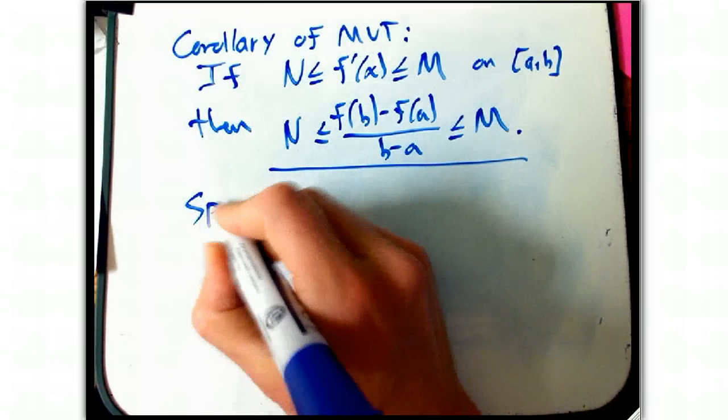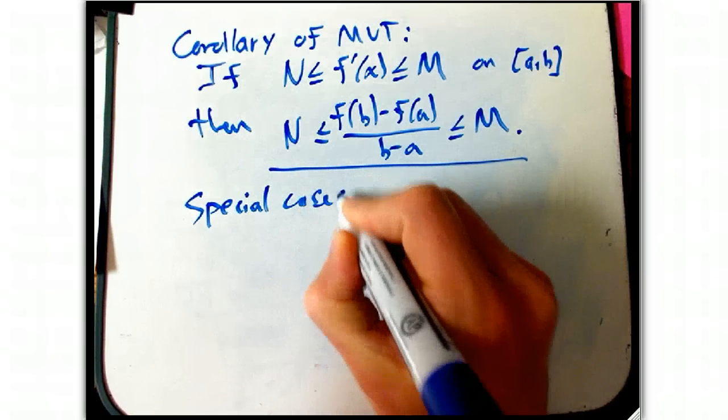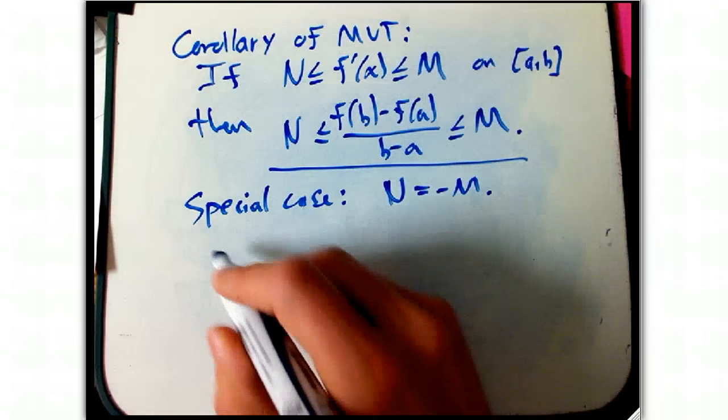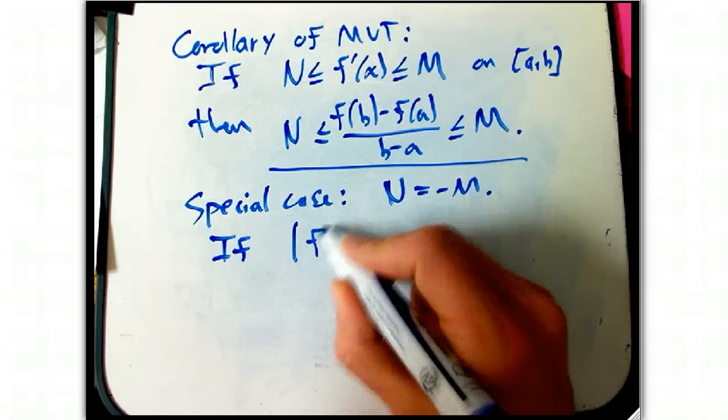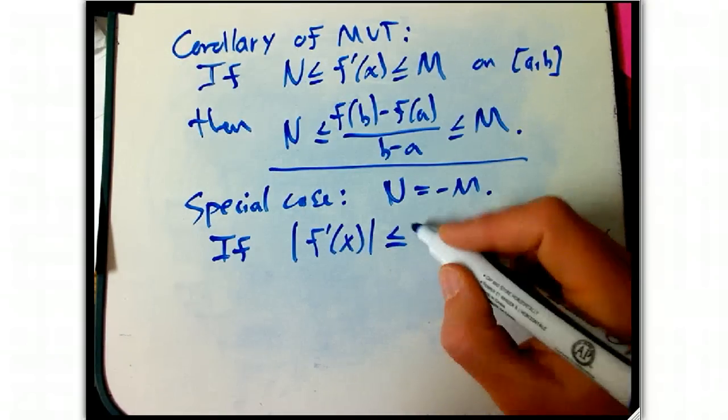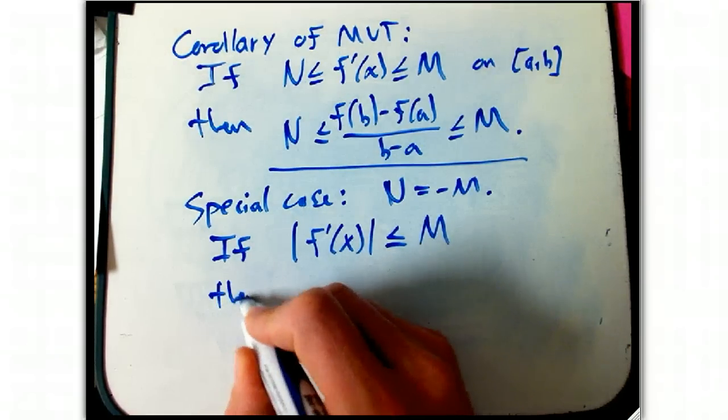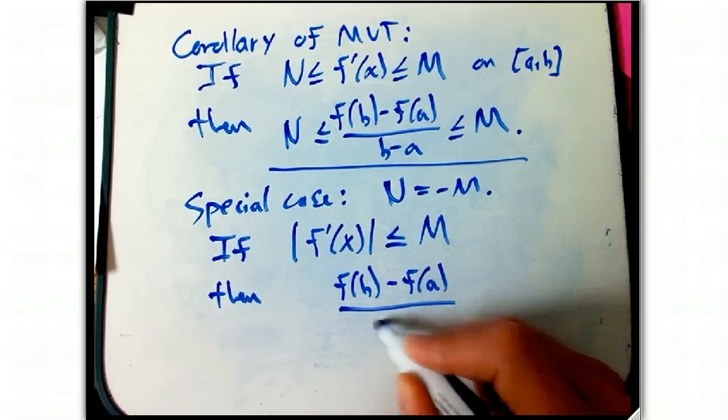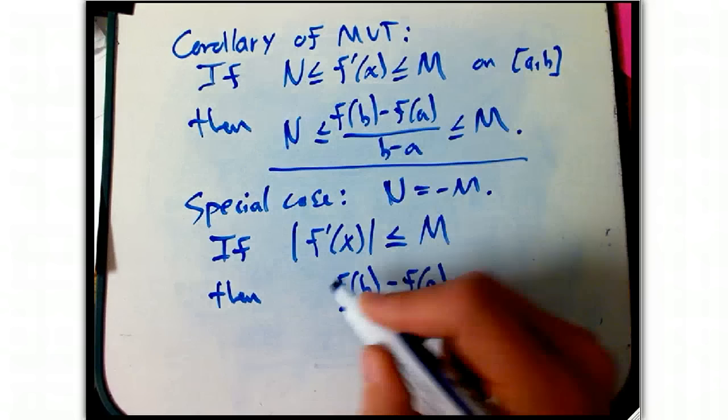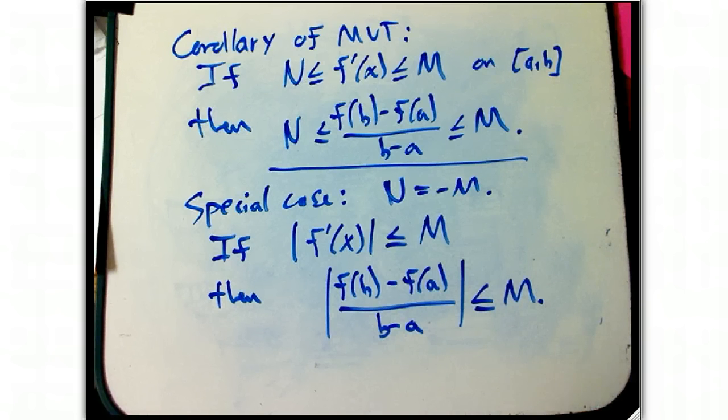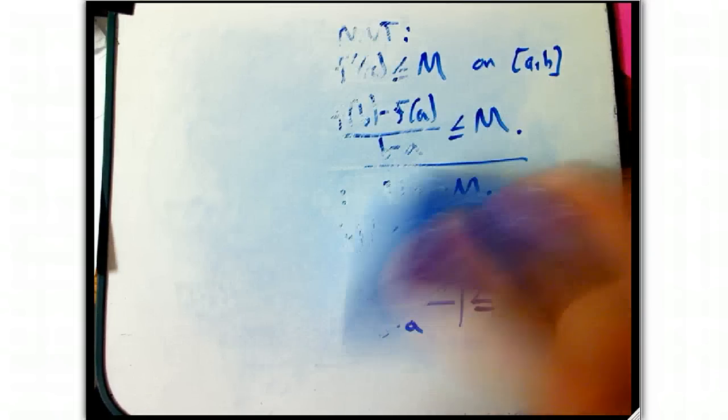So, here's a special case, which is really nice. It's where n equals minus m, and we can tighten that, just have the notation up a little bit. But if the size of the derivative, just the magnitude, strip off the sign, the absolute value of the derivative is less than or equal to m, then any secant slope that's also between minus m and m, or in other words, the absolute value of that is also less than or equal to m. So, let me show you how to use that. Let me use both the corollaries.